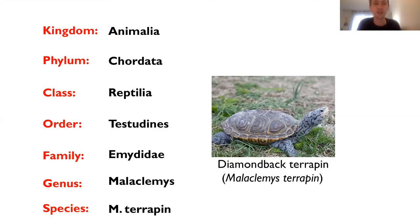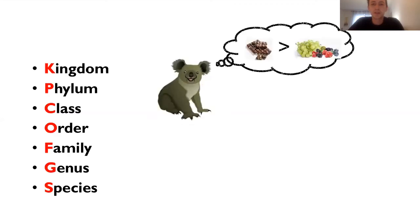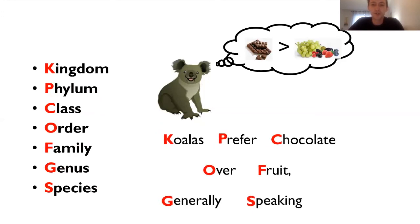I don't expect you to memorize all those Latin words — this is way too much information. What I do want you to understand is that for all living things we can look at kingdom, phylum, class, order, family, genus, and species as standard classification methods in taxonomy. To help remember the order, my students last year came up with a mnemonic sentence: 'Koalas Prefer Chocolate Over Fruit, Generally Speaking.' That's not actually true — do not feed a koala chocolate. But if you can remember that sentence, you'll remember the correct order of the seven levels.